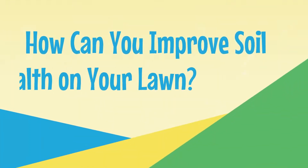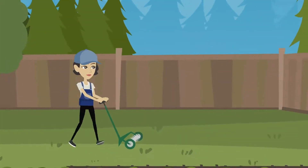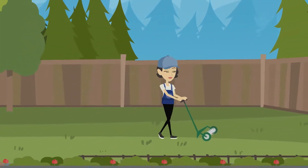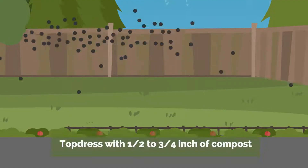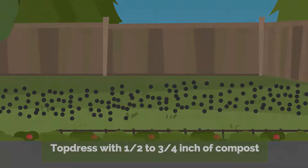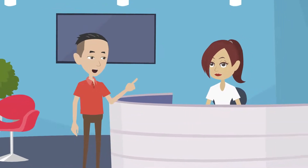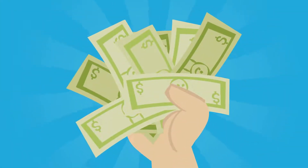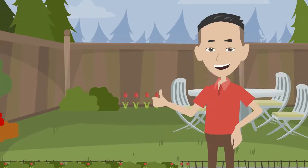How can you improve soil health on your lawn? To improve soil health of existing lawns, aerate as deep as possible in the spring or fall, then top dress with half to three-quarter inch of compost. Contact your community or soil and water conservation district to find out if cost share funds are available for soil quality restoration on your lawn.